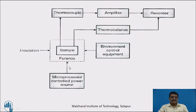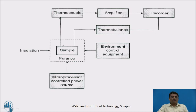The furnace is connected with a microprocessor-controlled power source, which is capable of heating the sample at a controlled rate — minimally 2 degrees centigrade per minute up to 250 degrees centigrade per minute. The furnace is also connected with a thermocouple and a thermobalance. When the sample is being heated, some signals are received by the thermocouple and some by the thermobalance.